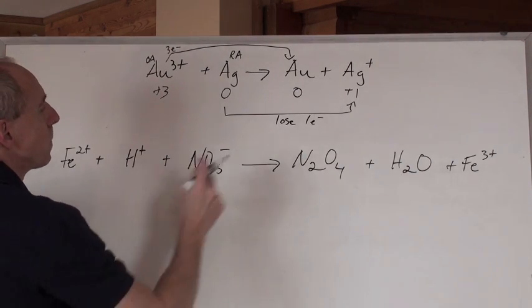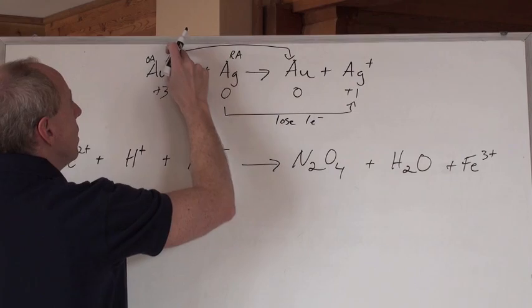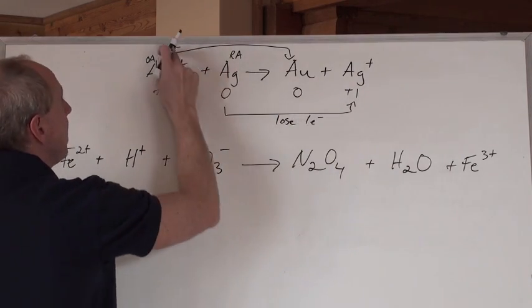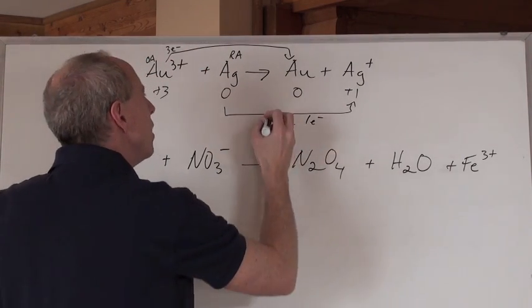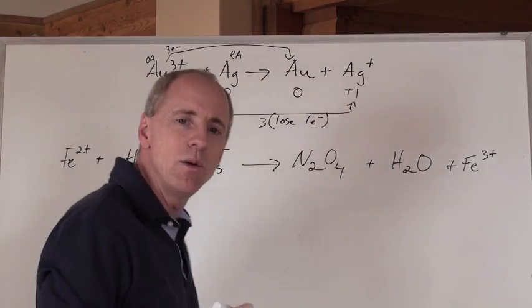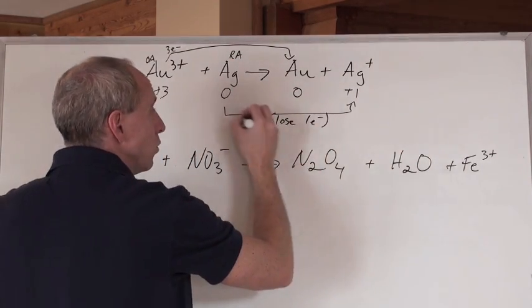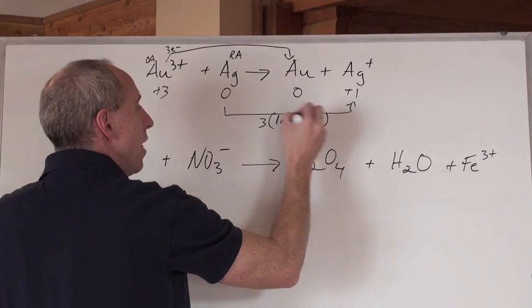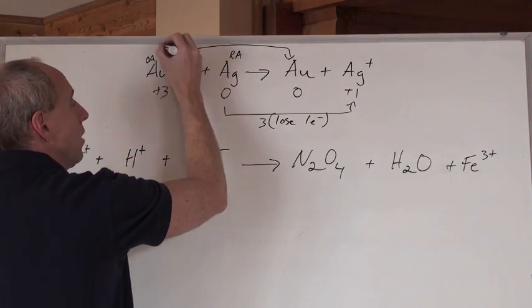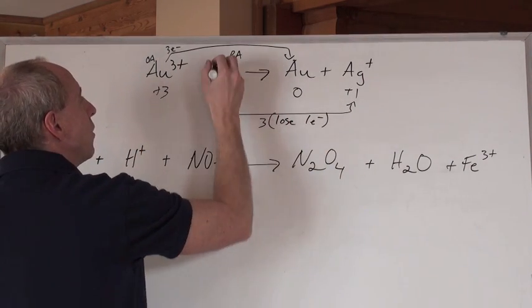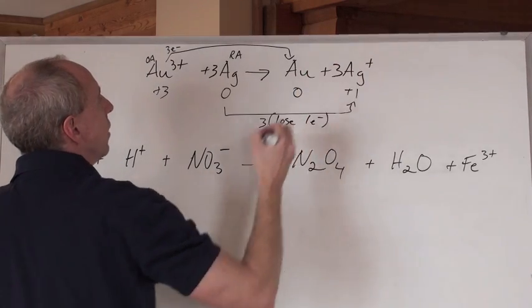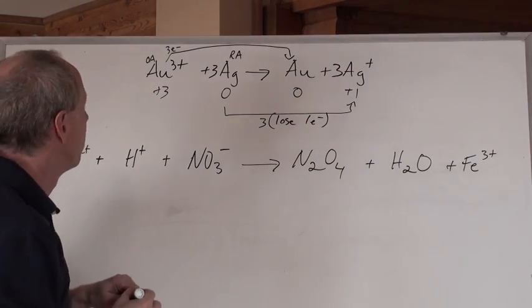Now what are you going to do? This is lose 3. That is lose 1, gain 3. So what are you going to do? You want to make the loss and gain equal, so you multiply that by 3. This one that loses 1. So that means if you put a 3 there, to make the electrons cancel at 3 and 3, you've got to put a 3 in front here, and a 3 in front here. Hey, guess what, ladies and gentlemen? That's balanced.